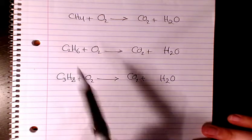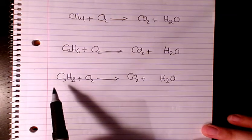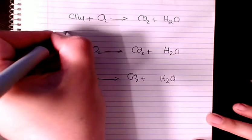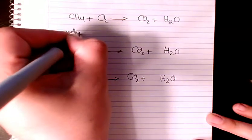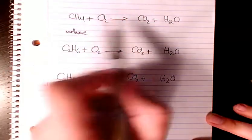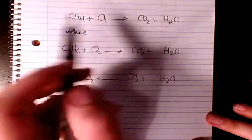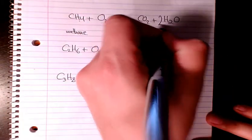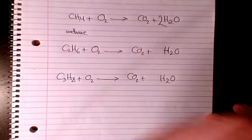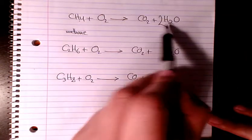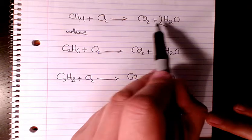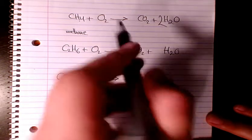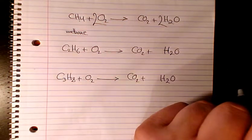So the first one we have methane. Methane has one carbon, so here we have one carbon, so carbon is balanced. What about H? We have four here, we have two here, so it's going to be 2H2O. So now right now carbon and hydrogen is balanced. What about oxygen? We have two oxygen here and two oxygen here, it's going to be four.